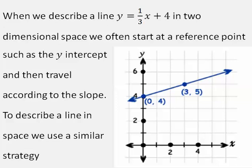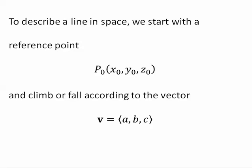To describe a line in space, we use a similar strategy. We start with a reference point and climb or fall according to a vector.